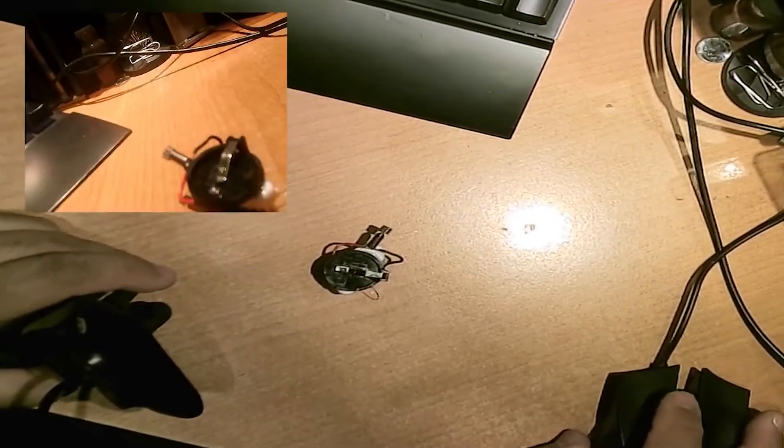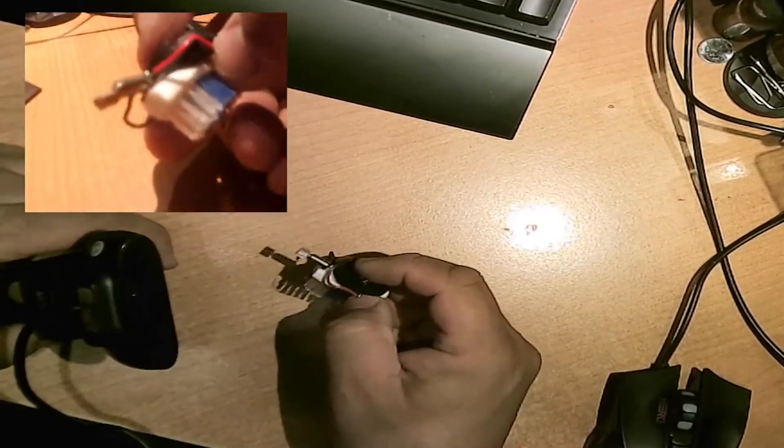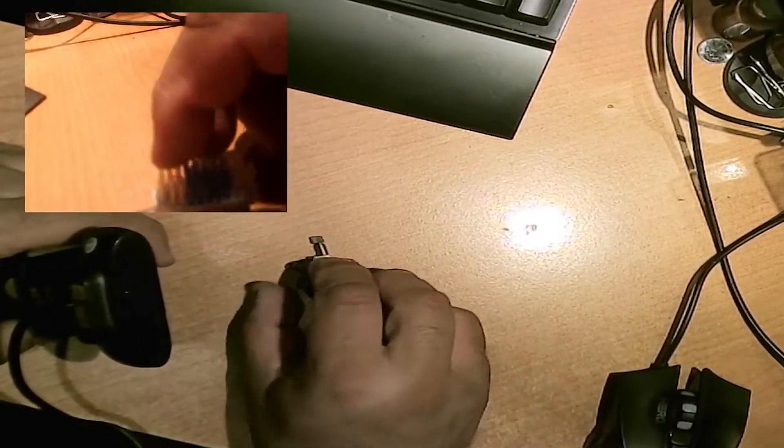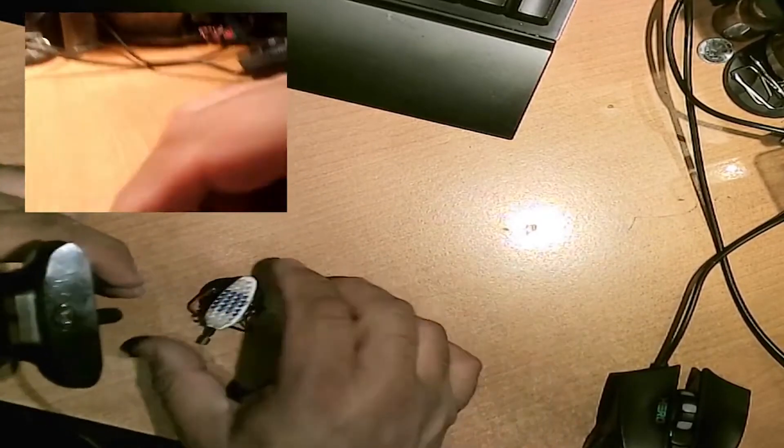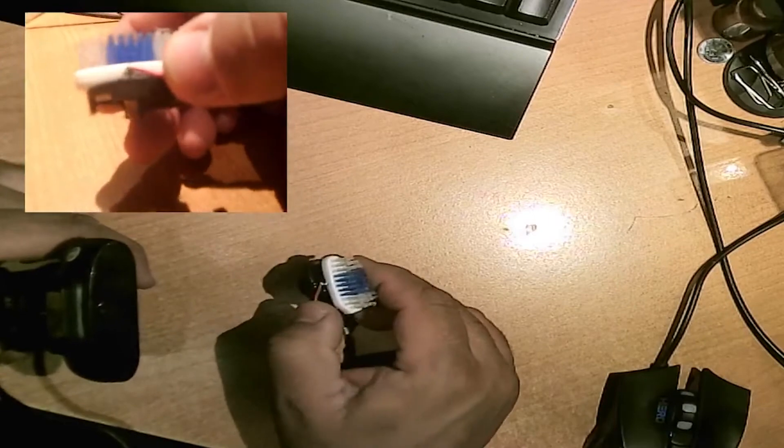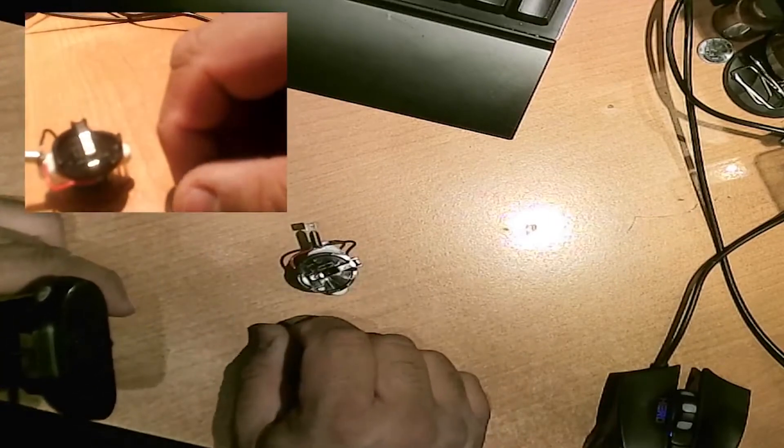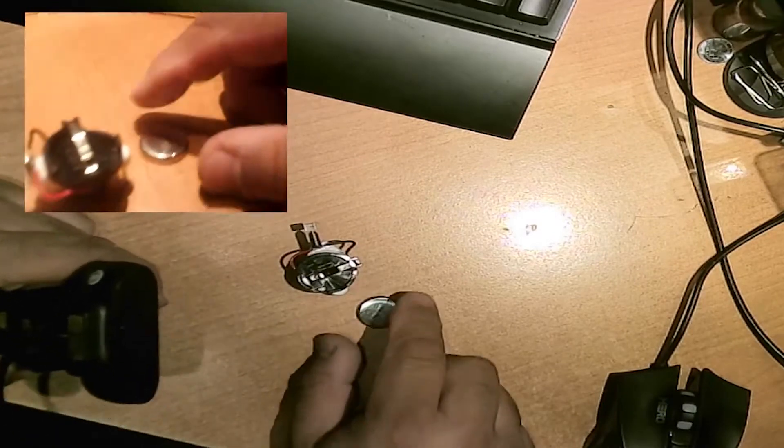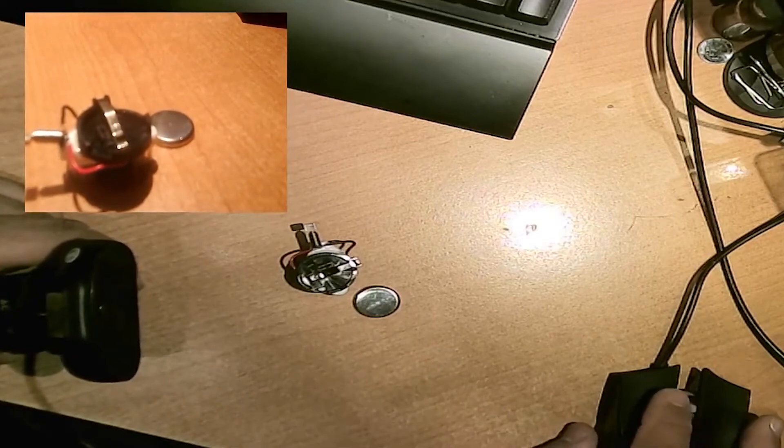As you can see, it has a motor, there's a toothbrush, and the only part that is missing right here is the battery. So there you are. Let's try it. See what's going to happen.